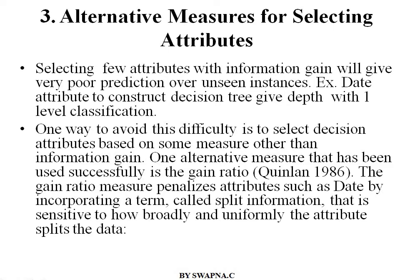To avoid this difficulty, we select decision attributes based upon some measures rather than information gain. One alternative measure that has been used successfully is the gain ratio. The gain ratio penalizes attributes such as date by incorporating a term called the split information, which is sensitive to how broadly and uniformly the attribute splits the data.